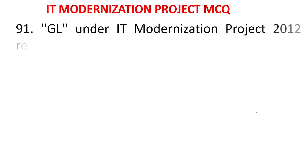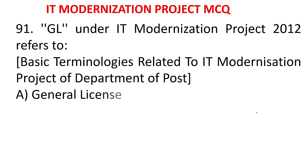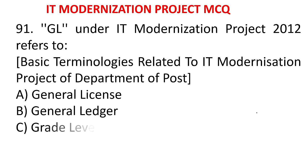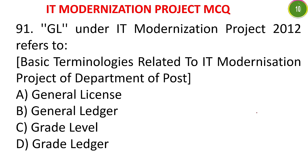MCQ 87: GL under IT modernization project 2012 refers to - A) General License, B) General Ledger, C) Grade Level, D) Grade Ledger. In accounts they use GL code - the answer is General Ledger.